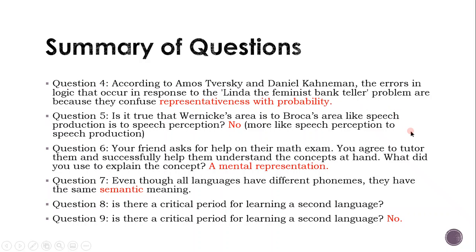We learned about Wernicke's area and Broca's area: Wernicke's area interprets speech and figures out what to say, and Broca's area brings you to say what Wernicke's area has figured out. A mental representation is how you represent a certain concept — when you speak to someone explaining something, that's a mental representation. We say 'representation' because no one has an objective understanding of reality. Even though all languages have different phonemes, they have the same semantic meaning — a study looked at 81 different languages and found they all had the same semantic meaning. Pragmatics is what meaning the sentence has in regards to social context.